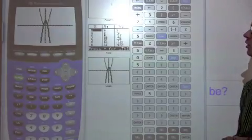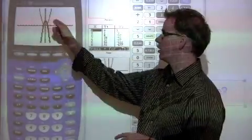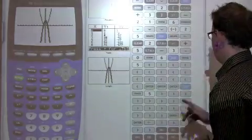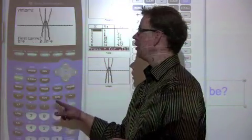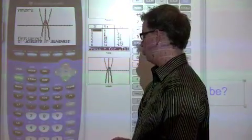Hit graph again. This time, the graph looks a little different. We have two parabolas. Again, same process. Hit second, calc. Go down to five, intersect. Scroll over to the one, intersect. Hit enter twice.